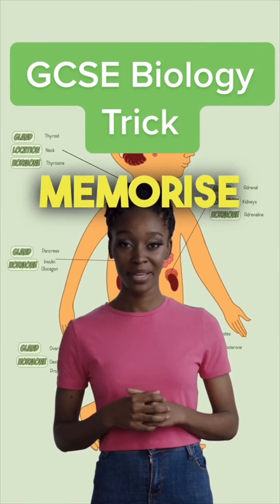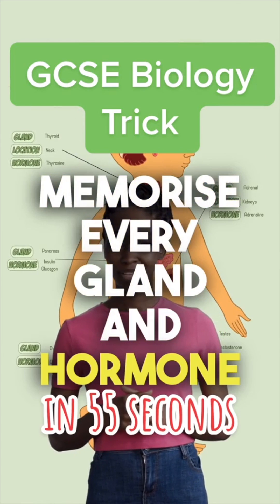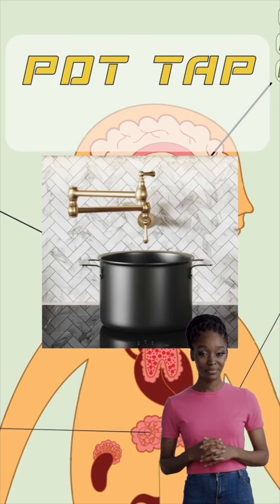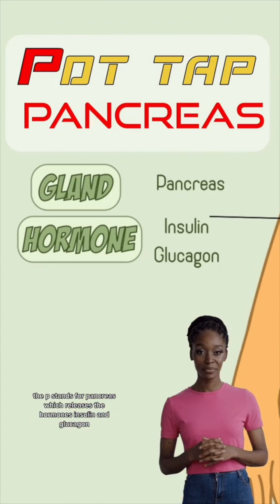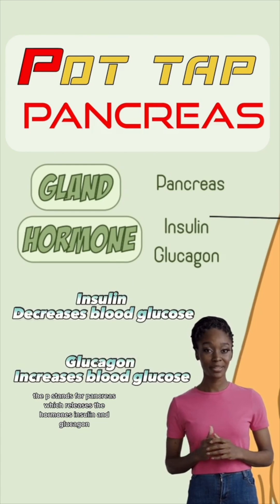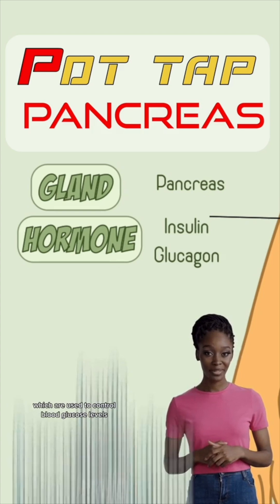Here's a trick to memorize every gland and hormone in 55 seconds. First you need to remember 'HOT TAP'. The P stands for pancreas, which releases the hormones insulin and glucagon, which are used to control blood glucose levels.